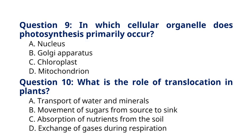Movement of sugars from source to sink. Explanation: Translocation is the process of transporting sugars produced during photosynthesis from the source (leaves) to the sink (growing or storage tissues) in plants.